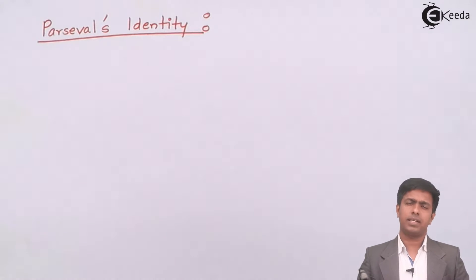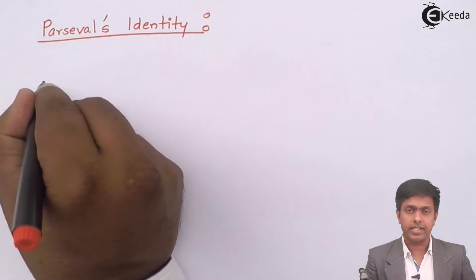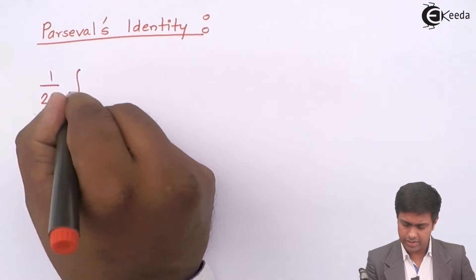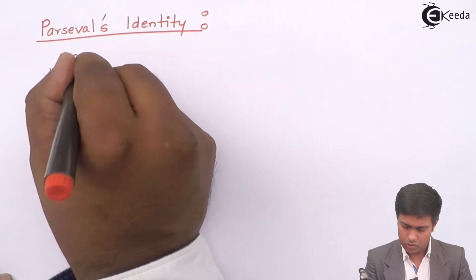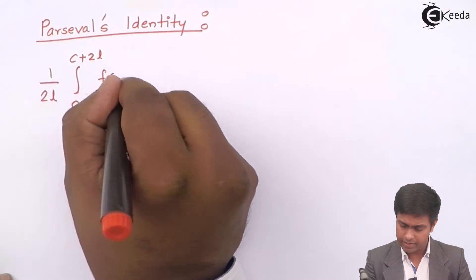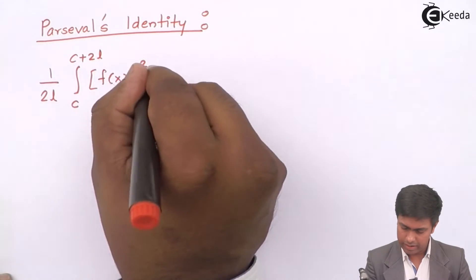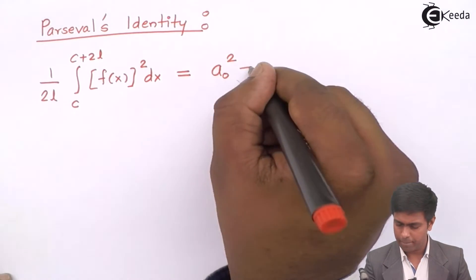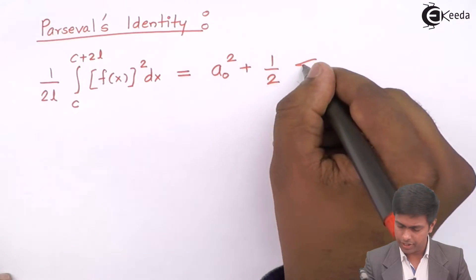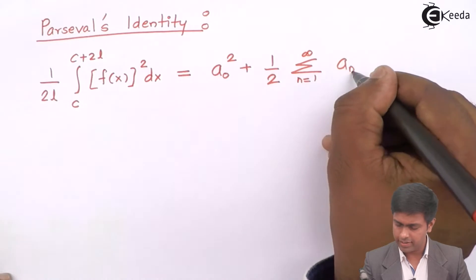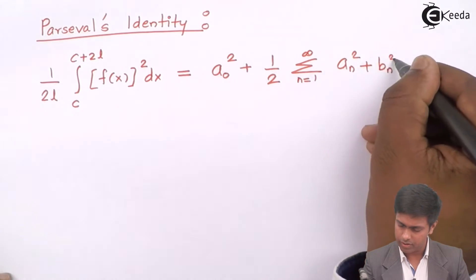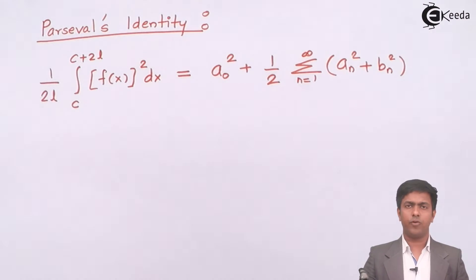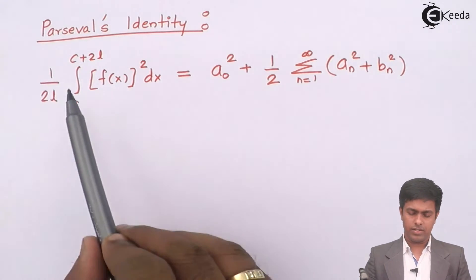Parseval's identity is given as: 1 upon 2l, integration from c to c+2l, of f(x) whole squared dx, equals a₀ squared plus 1/2 times summation from n=1 to infinity of (aₙ squared plus bₙ squared). This is the general formula for Parseval's identity, where the range is c to c+2l.